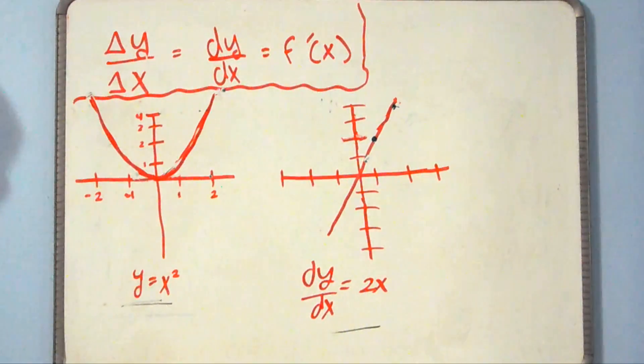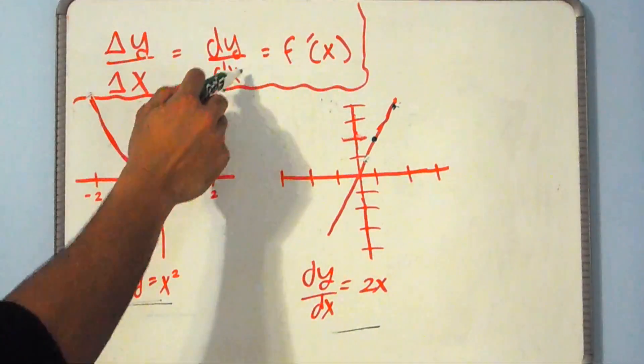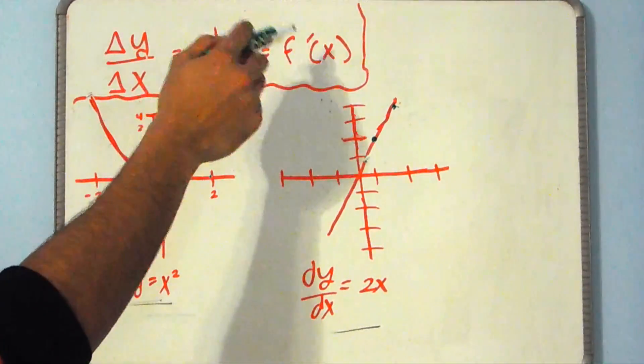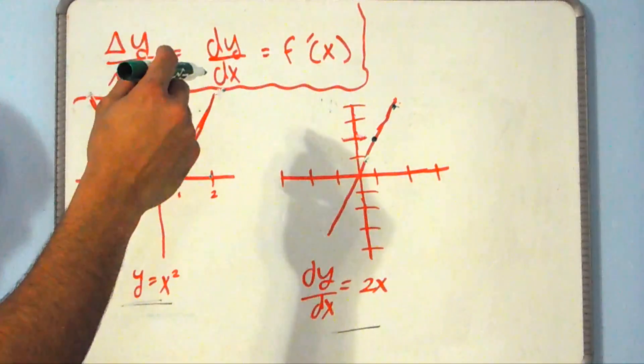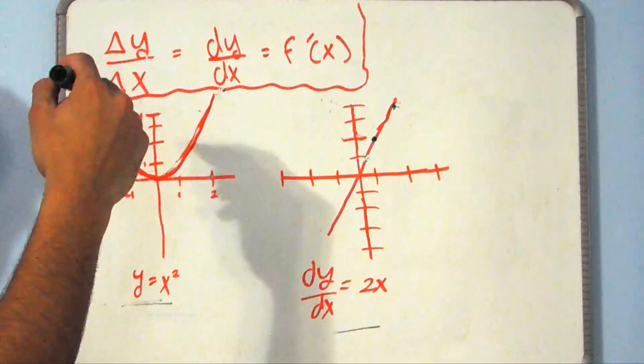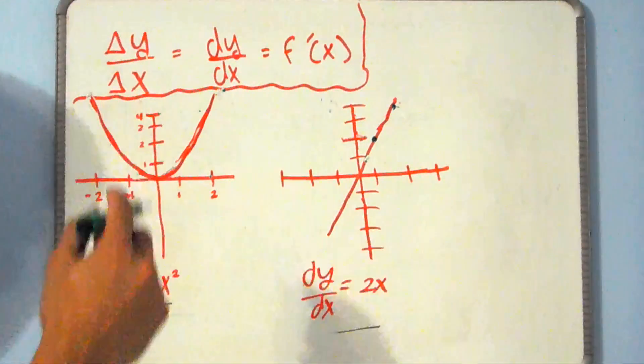And if we're given a function, we can also write the derivative as f prime of x. That is, f prime of x is the slope or the derivative of f of x.